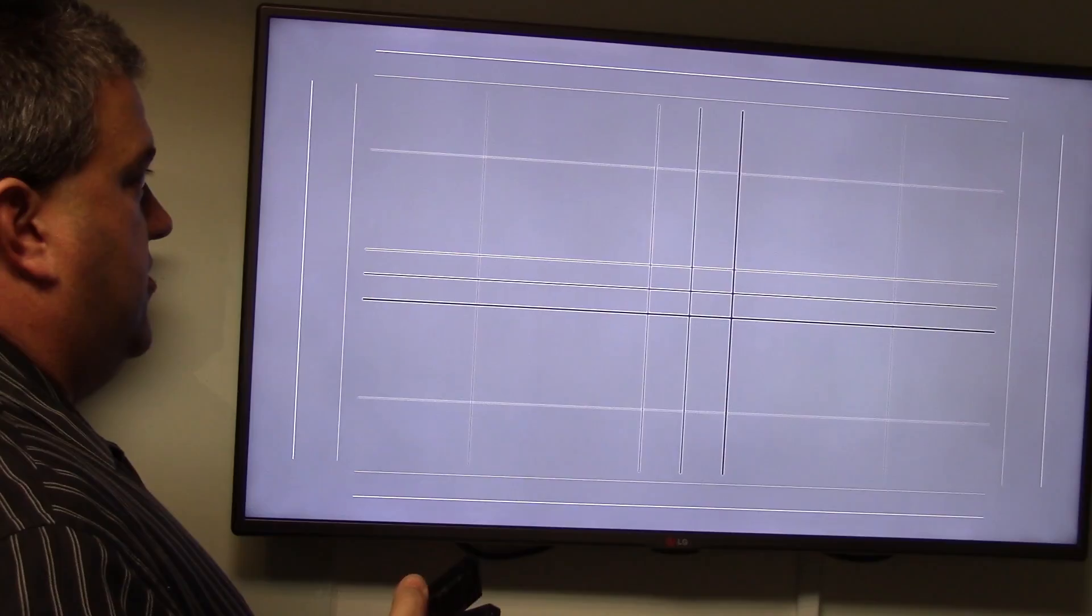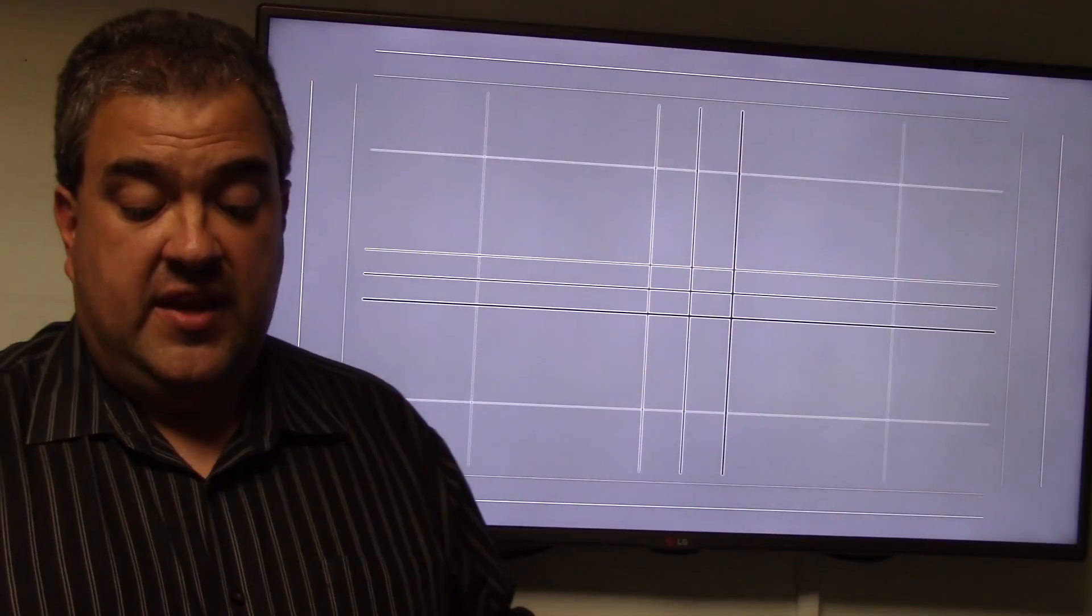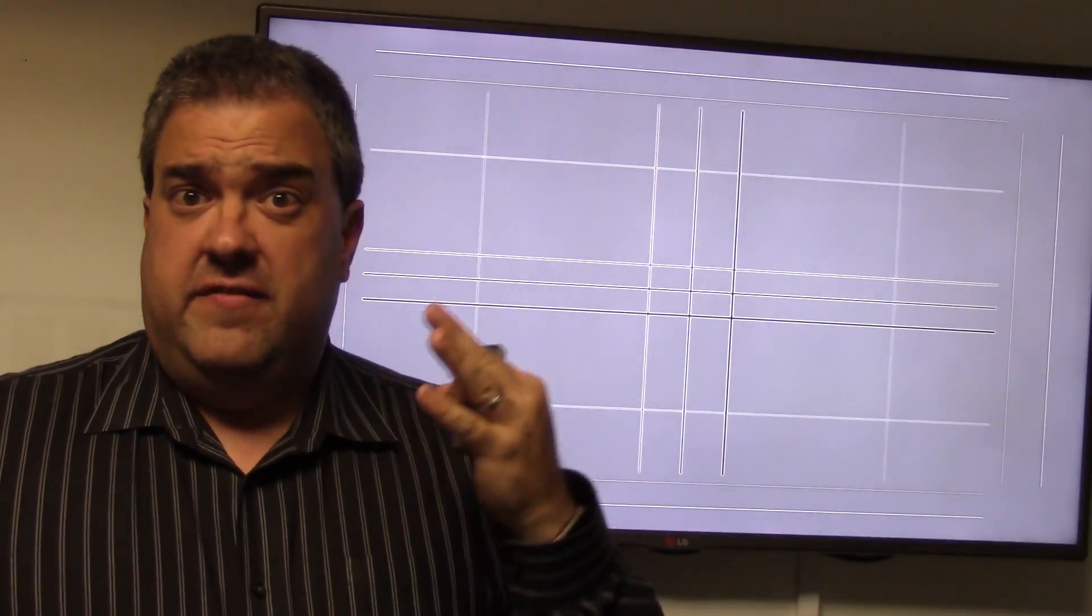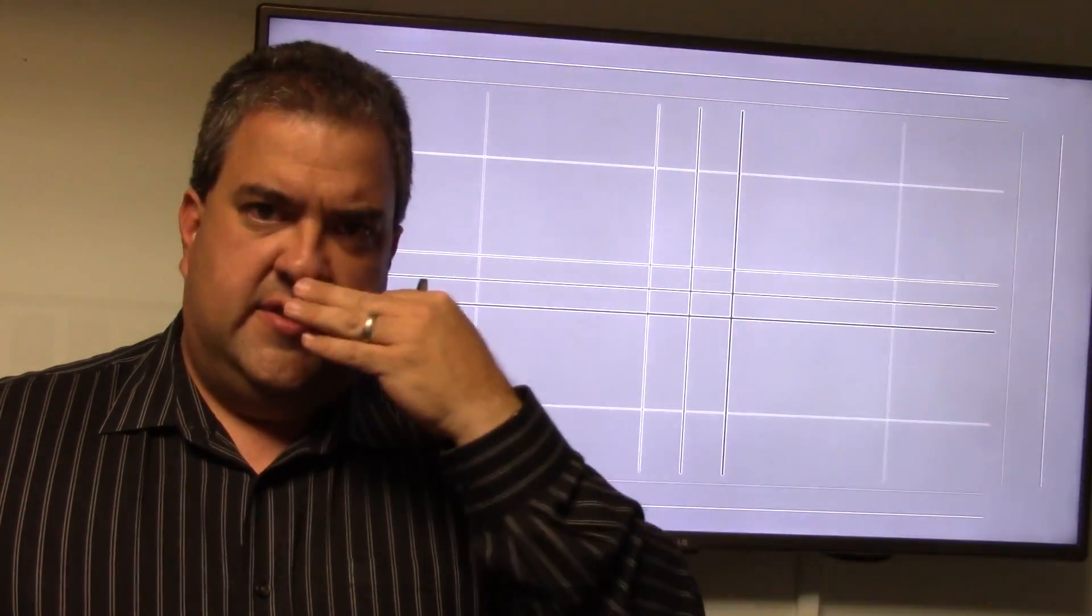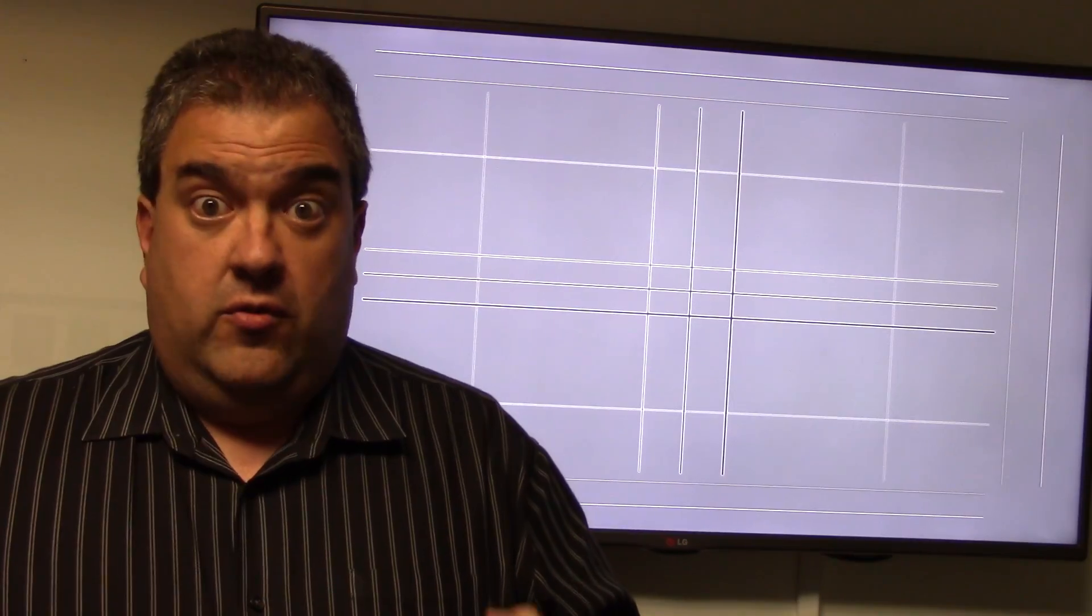If I turn the enhancer on and in fact go to high, you can see I can really make all those lines just really pop off the screen. I mean, that's a really big deal. If you've got an outdoor TV or a TV in a room that's relatively bright, it'll really help you out.